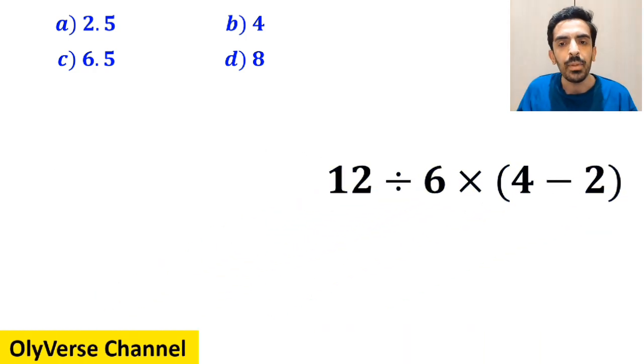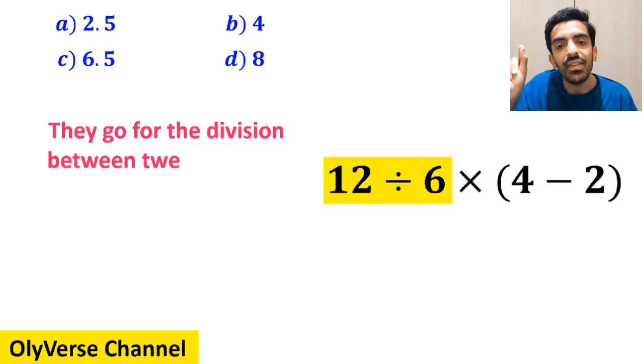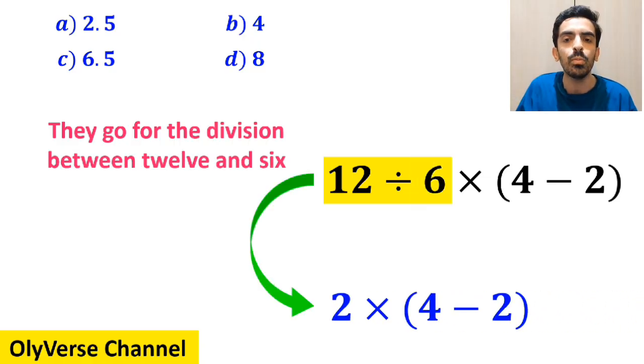In the next step, they go for the division between 12 and 6 and this expression simplifies to 2 multiplied by 4 minus 2 inside the parenthesis.